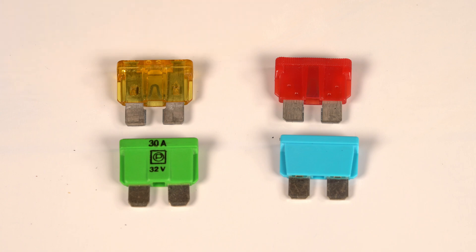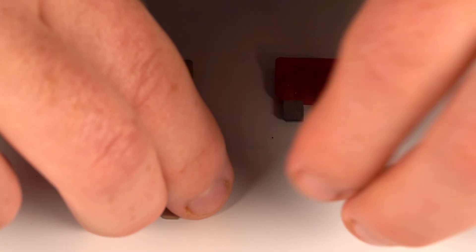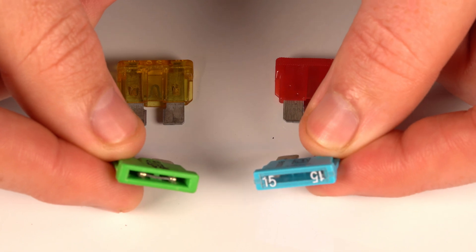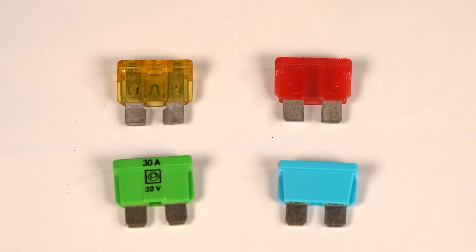This one right here is the typical one I encounter. These two are interesting, and I rarely encounter them, but they actually let you see the fuse element without having to pull the fuse out. With these two, you have to pull them out to look at them.